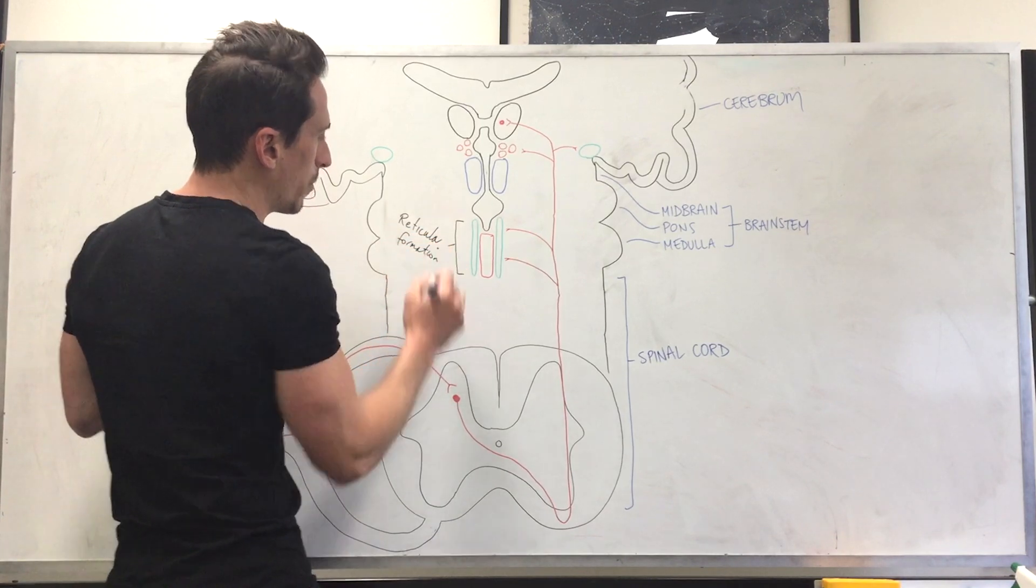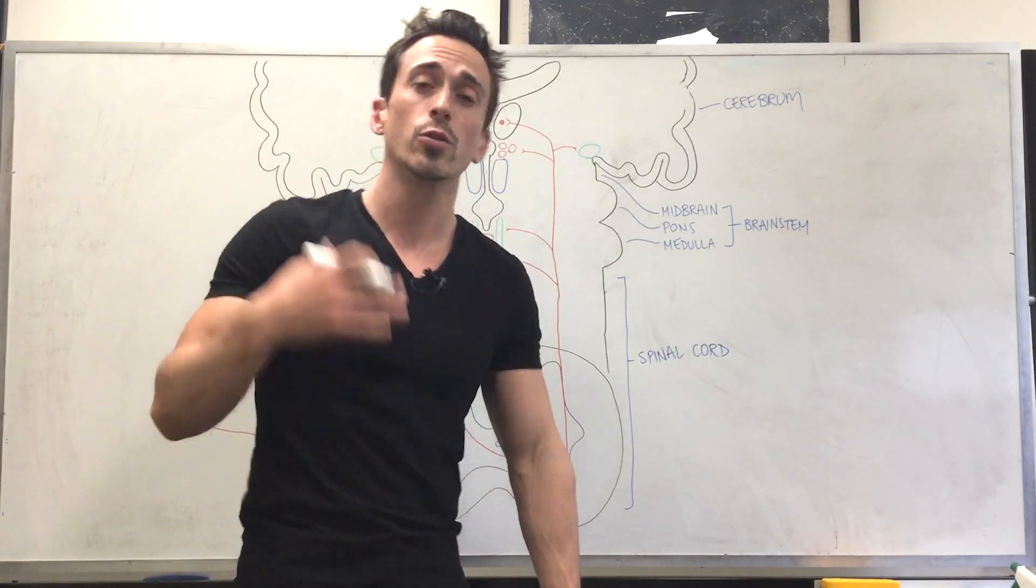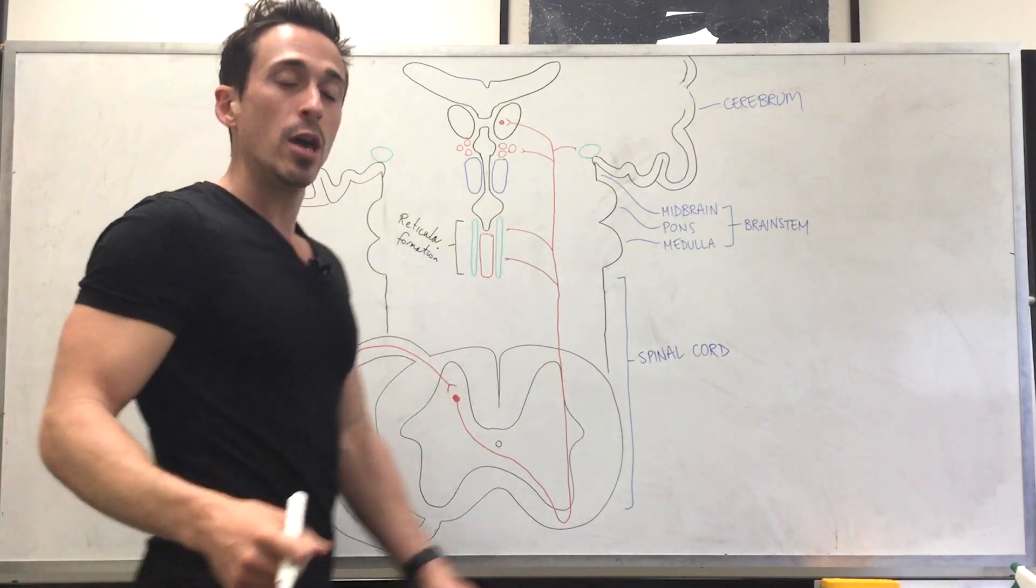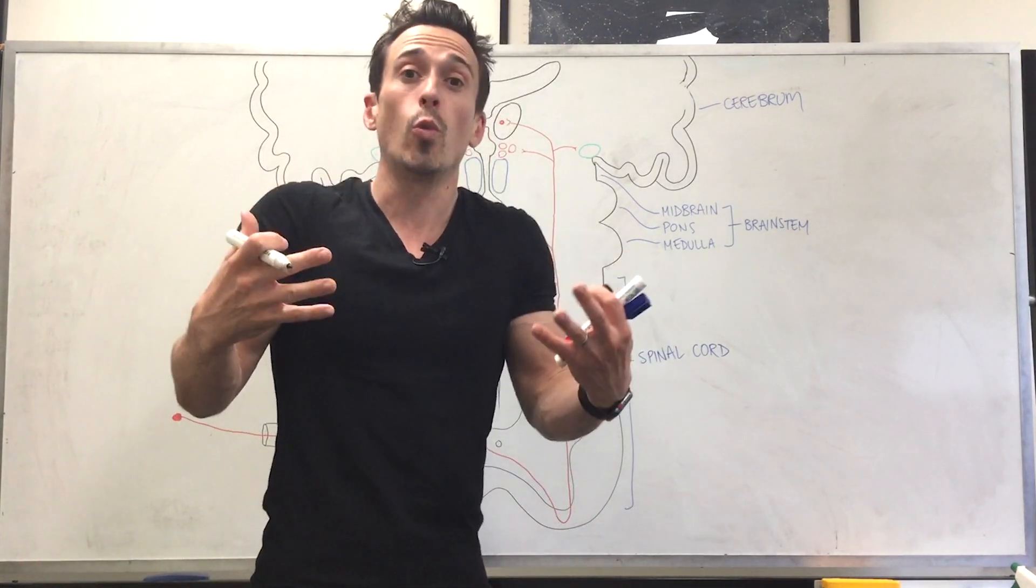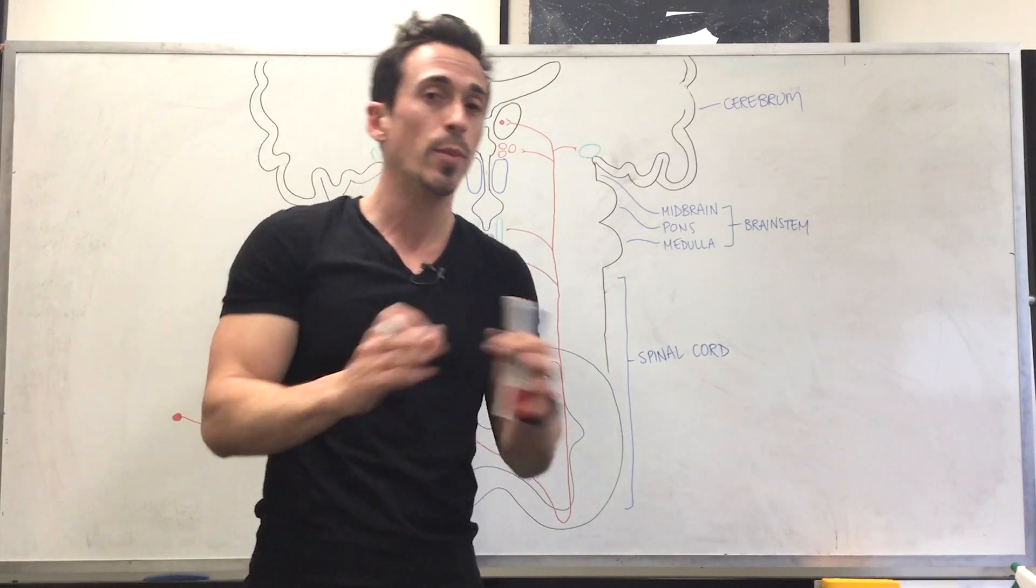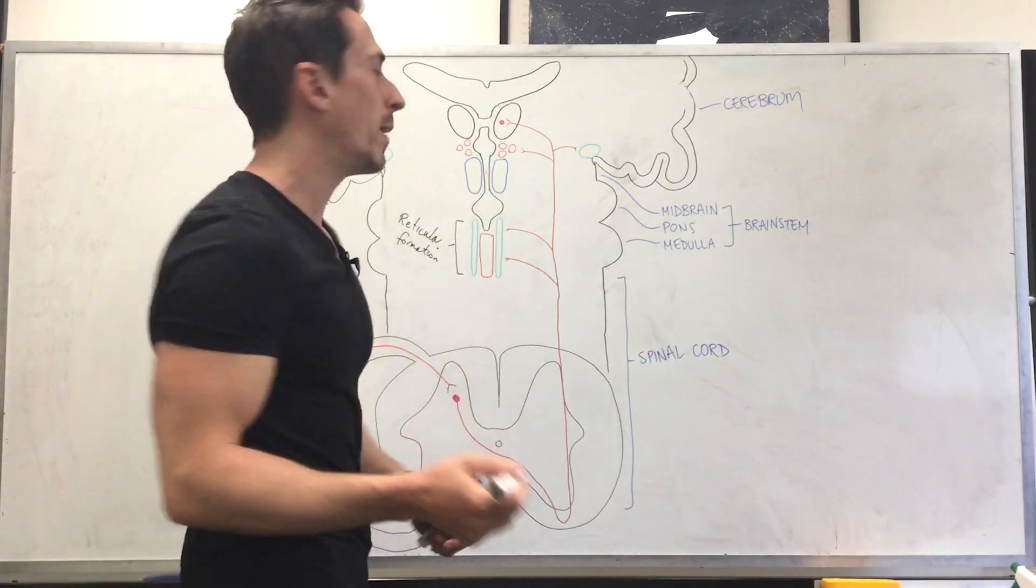What's important about the reticular formation? The reticular formation is important for consciousness, sleep-wake cycles, arousal. Why do we want a painful stimuli synapsing and talking to this area? Because what happens when we're in pain? We're awake. We need to be aware of exactly what's going on. We don't want to be drowsy. We don't want to be unconscious. We want to be consciously aware so we can avoid that pain. So it stimulates the reticular formation.